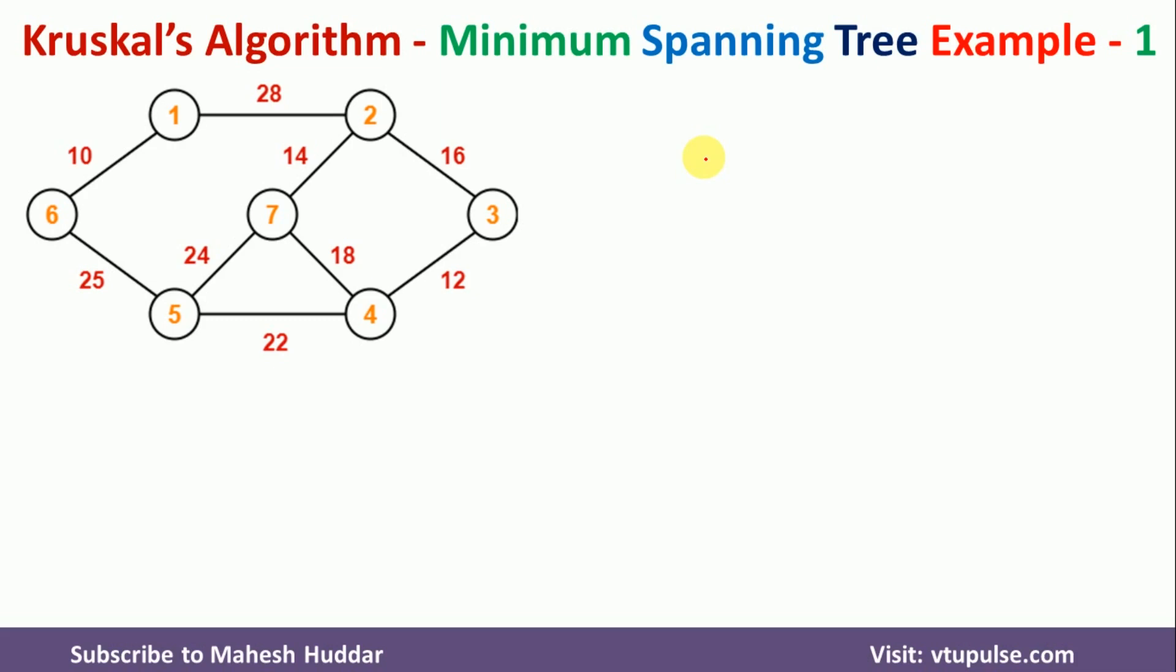In Kruskal algorithm, what we do is, we will first draw all the nodes. For example, we have seven nodes, so we will draw those particular seven nodes first. That is 1, 2, 3, 4, here it is 5, 6 and then 7.